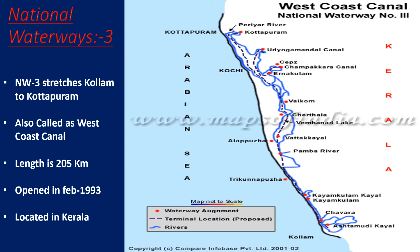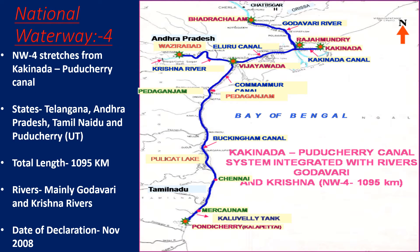National Waterway Three, NW3, stretches from Kollam to Kottapuram. It is also called the West Coast Canal. The length is 205 kilometers, and it was opened in February 1993. It is located in the state of Kerala.